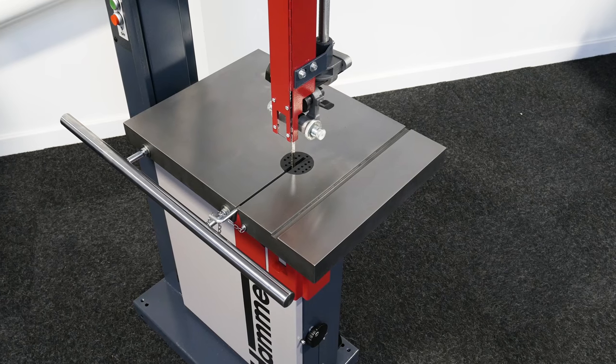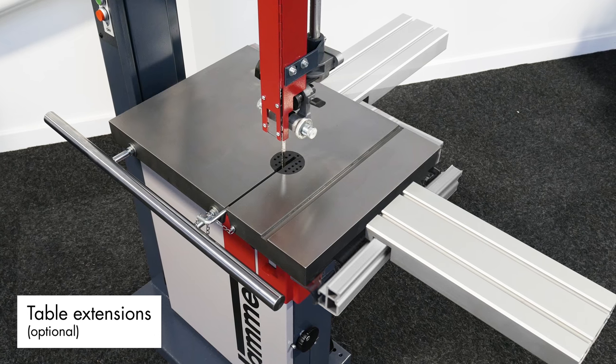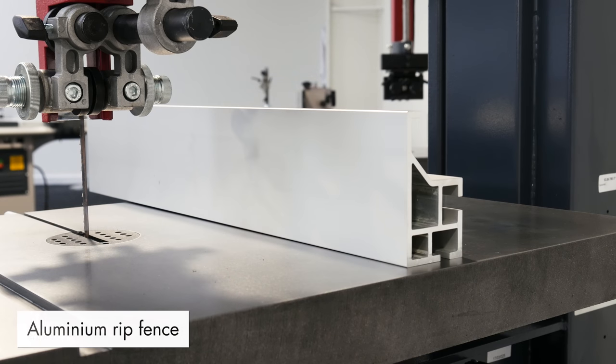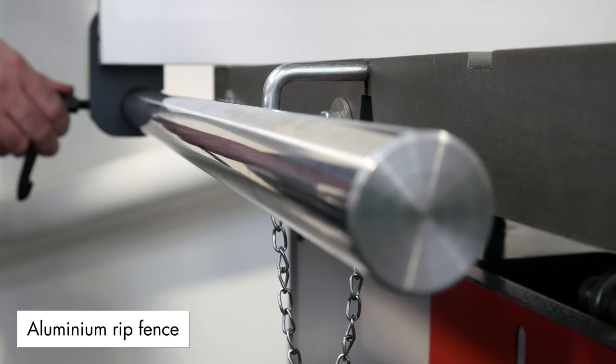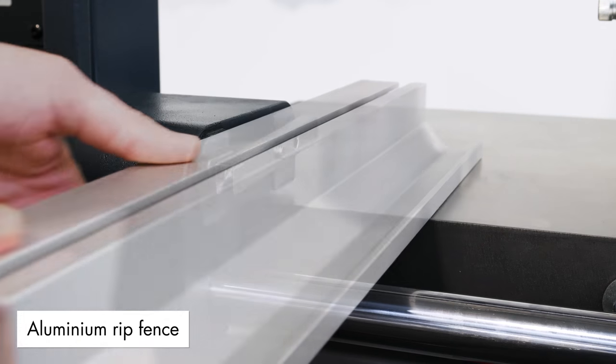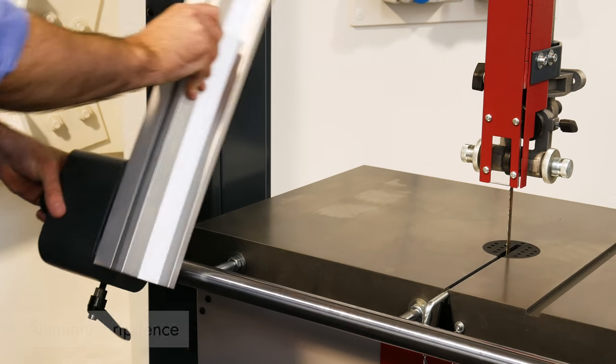Optional table extensions are available at different sizes to allow processing of larger work pieces. The N4400 also features an aluminium rip fence that is guided precisely along the round bar. The fence can be laid flat for processing narrow work pieces or swung away and removed completely for larger items.